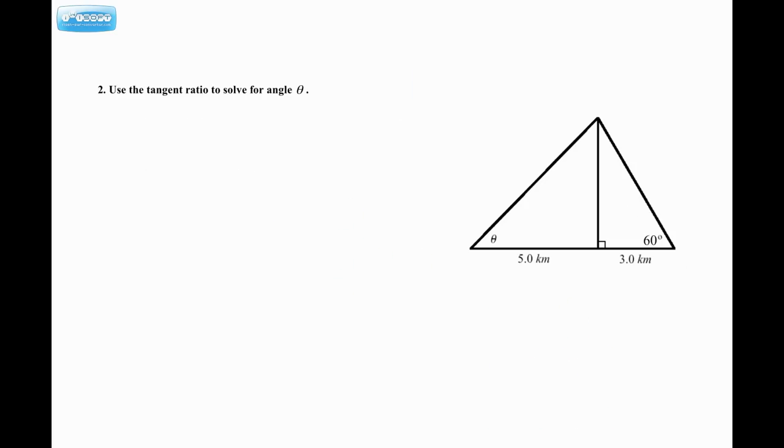Number 2. Use the tangent ratio to solve for angle theta. So here's my angle here. And I have a composite shape, meaning it's built of multiple shapes, because we have one large triangle, but you can see it's built of two right triangles. So if that's 90 degrees, that's also 90 degrees. So if we want the tangent ratio, we can only work with right triangles.